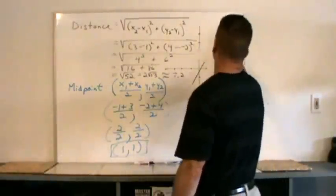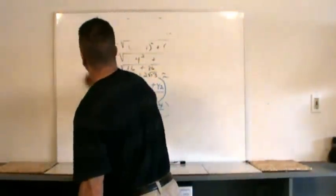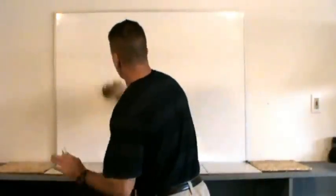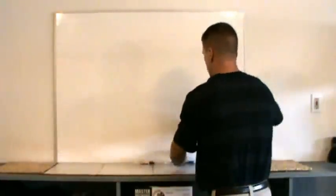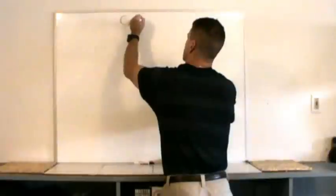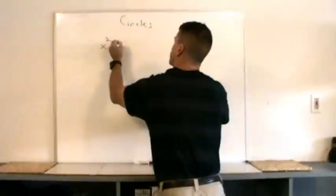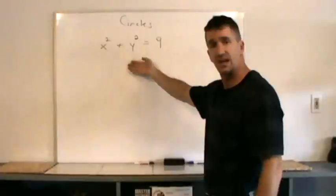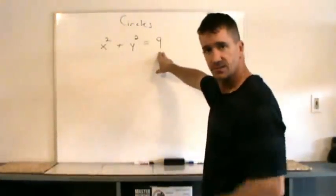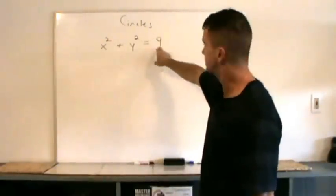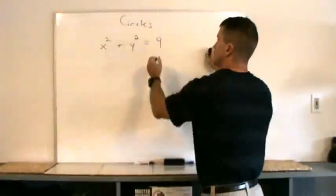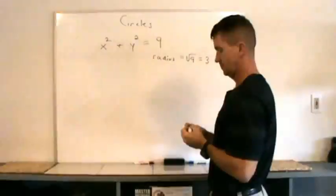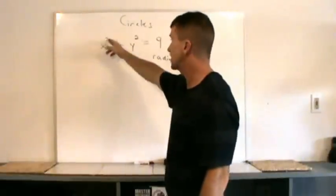Lastly, let's talk about circles. Are circles functions? No — they fail the vertical line test. A common circle equation centered right at the origin would be something like x squared plus y squared equals nine. The radius is not nine; the radius is the square root of that number. So the radius equals the square root of nine, which is three. The general form is x squared plus y squared equals r squared, where r is the radius.